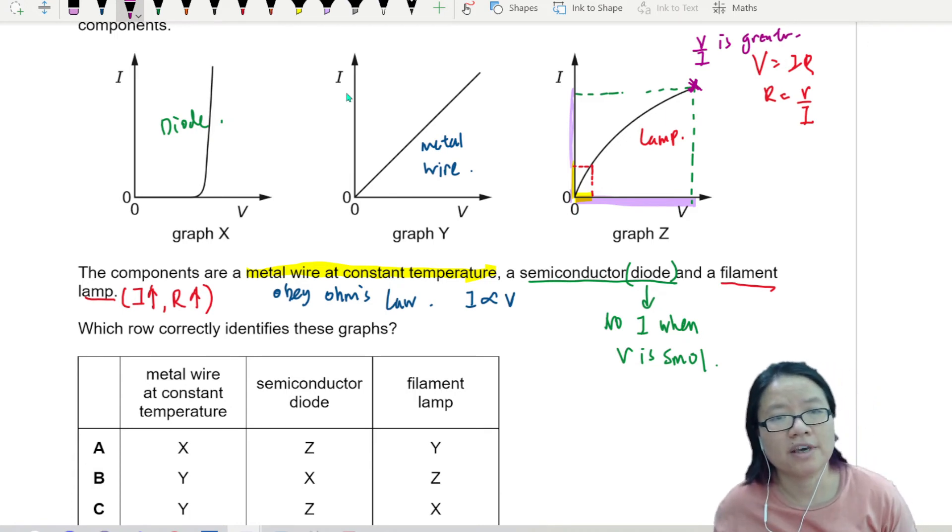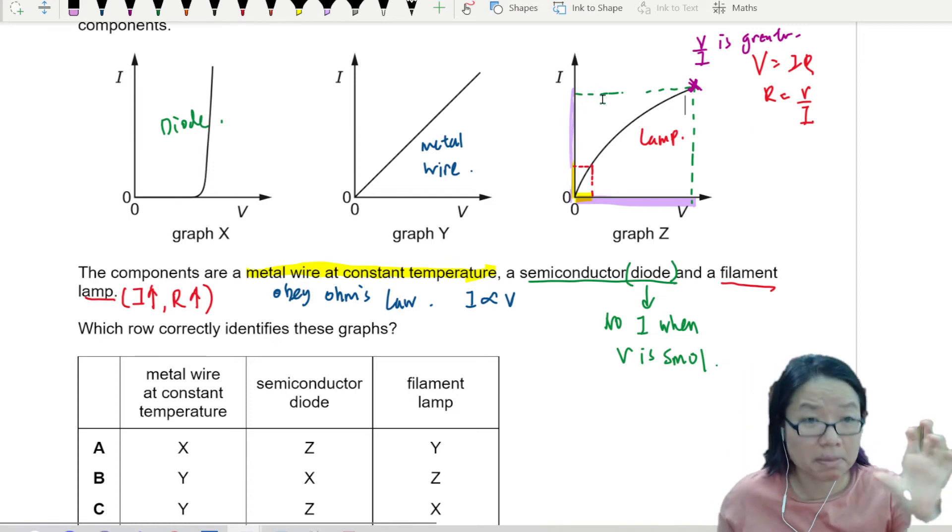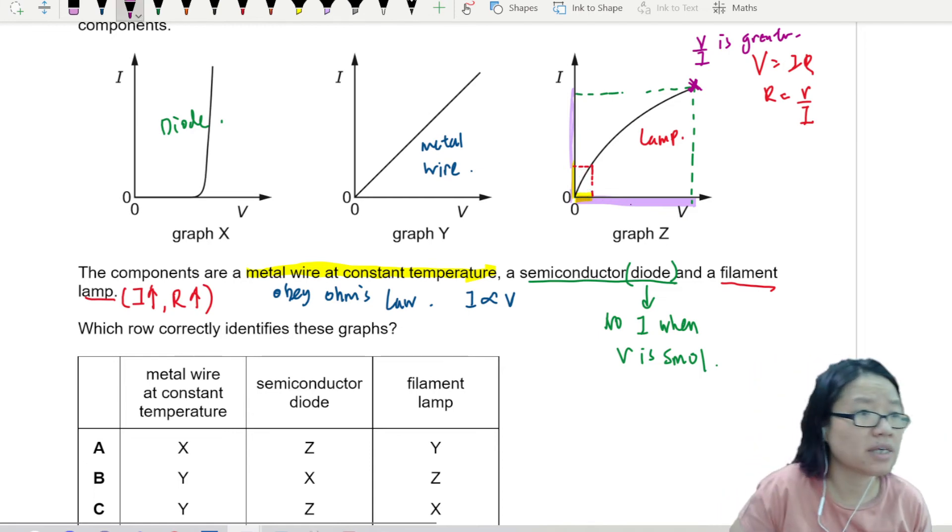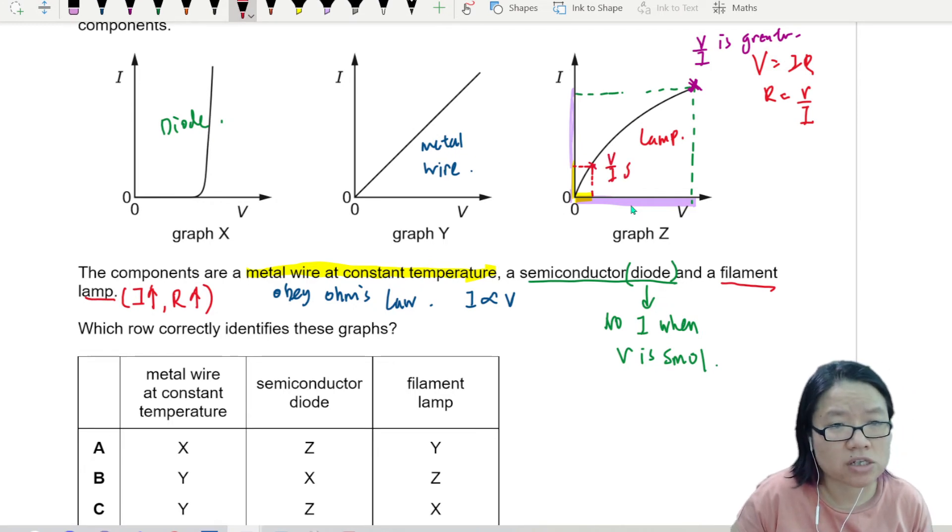Because if you take this purple length divided by this other purple length that is about the same length, you can use your ruler to measure, you get the same. Whereas if you look at the yellow color portion, the V is smaller, then the I is bigger. So at here, the V over I is smaller.